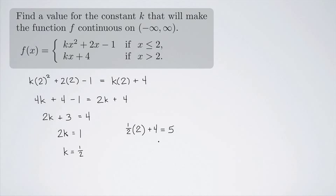1 plus 4 is 5. So at the point (2, 5), I should see the graph change from a parabola to a line.